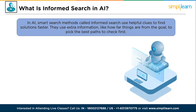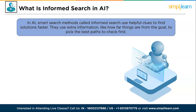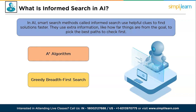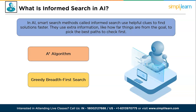So what is informed search in AI? Smart search methods called informed search use helpful clues to find solutions faster. They use extra information — like how far things are from the goal — to pick the best path to check first. This helps them reach solutions more quickly and efficiently. Examples include A* and greedy best first search. They often enhance efficiency compared to uninformed search by narrowing down search direction, potentially reducing exploration time. However, the accuracy of heuristic information and its computational complexity can impact their performance.